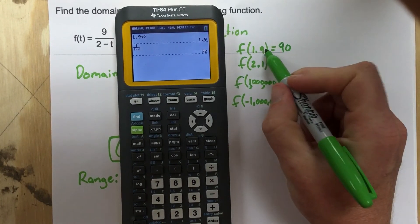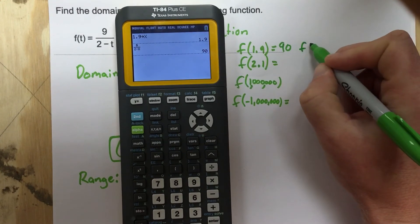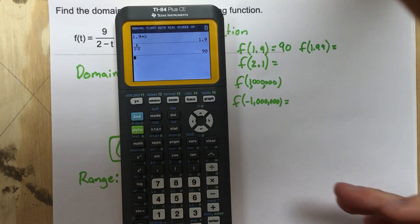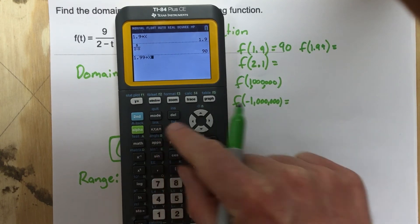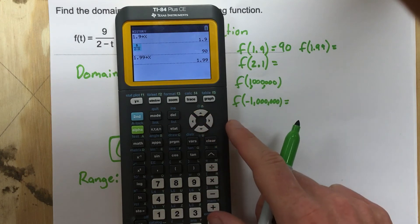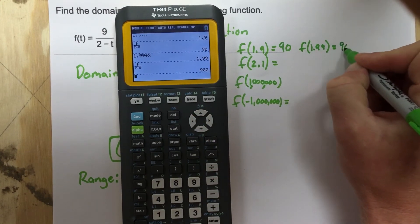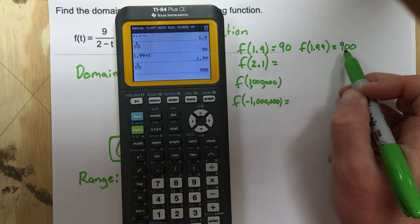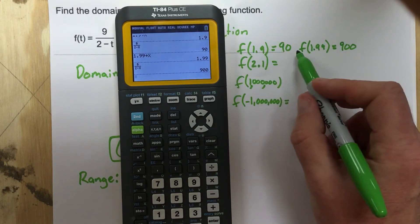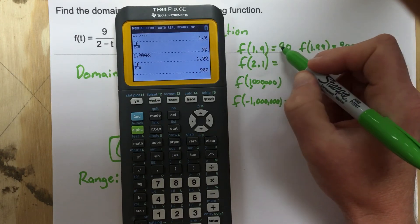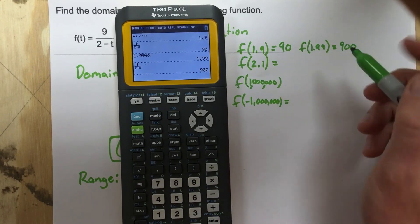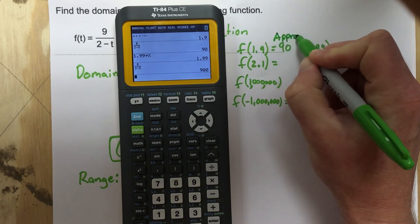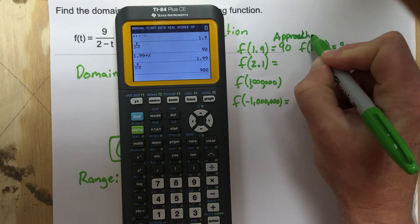Now I'm going to actually do f of 1.99 as well. When I do f of 1.99, I'm even closer to 2. So let's go ahead and say 1.99, store it as x. And let's grab that function there. Now I'm at 900. Notice that's getting larger. And it got larger by 10 times. So if I go 1.999, I could expect 9,000. So what's this approaching here? Well, this is approaching infinity. So for f of 1.9 and then f of 1.99, as we get closer to 2 there, we're approaching infinity.